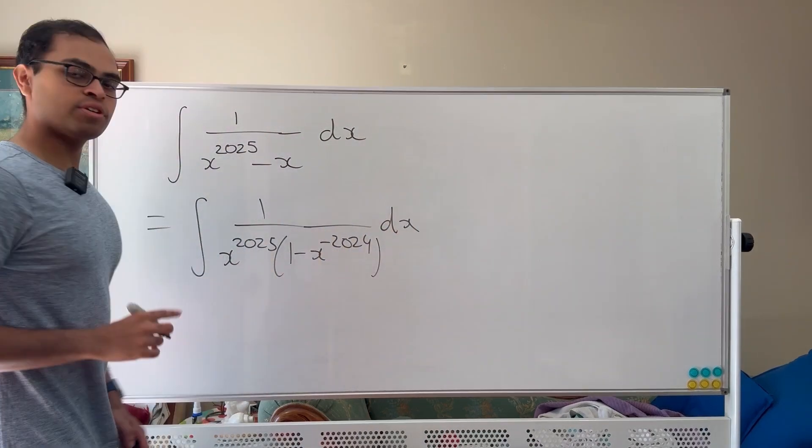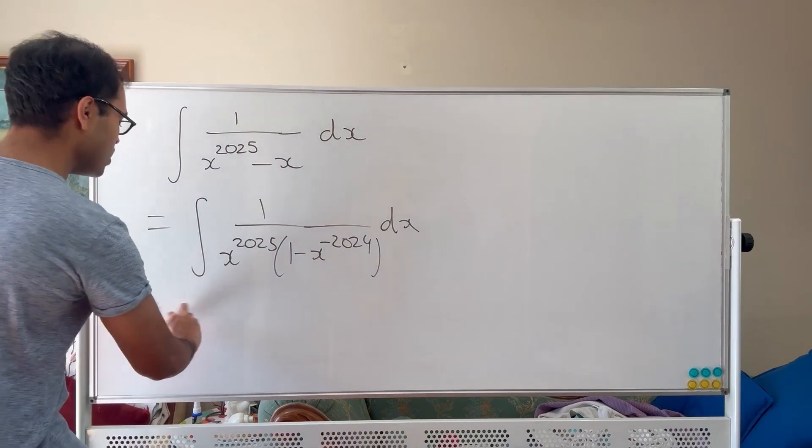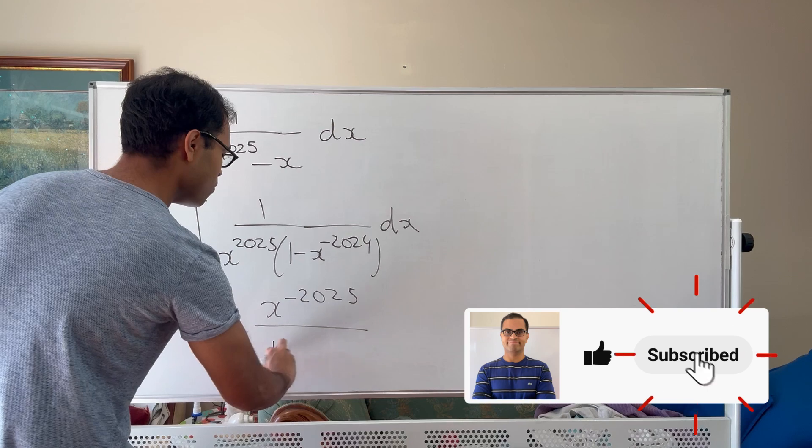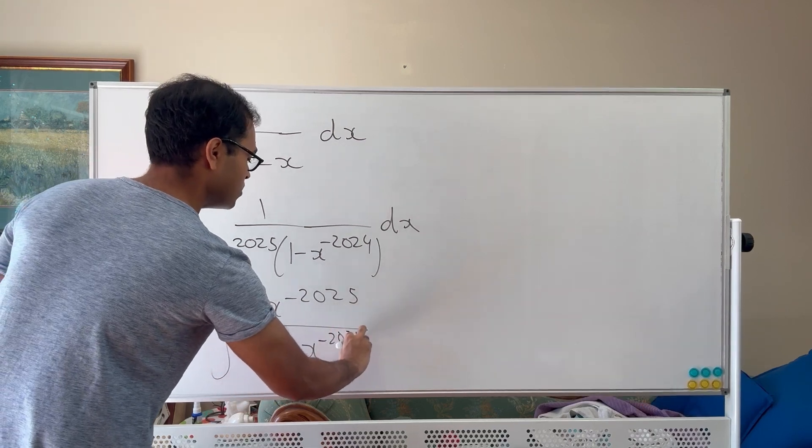Now what we're going to do is we're going to put that x to the 2025 on the bottom and write it up top as x to the negative 2025 divided by 1 minus x to the negative 2024 dx.